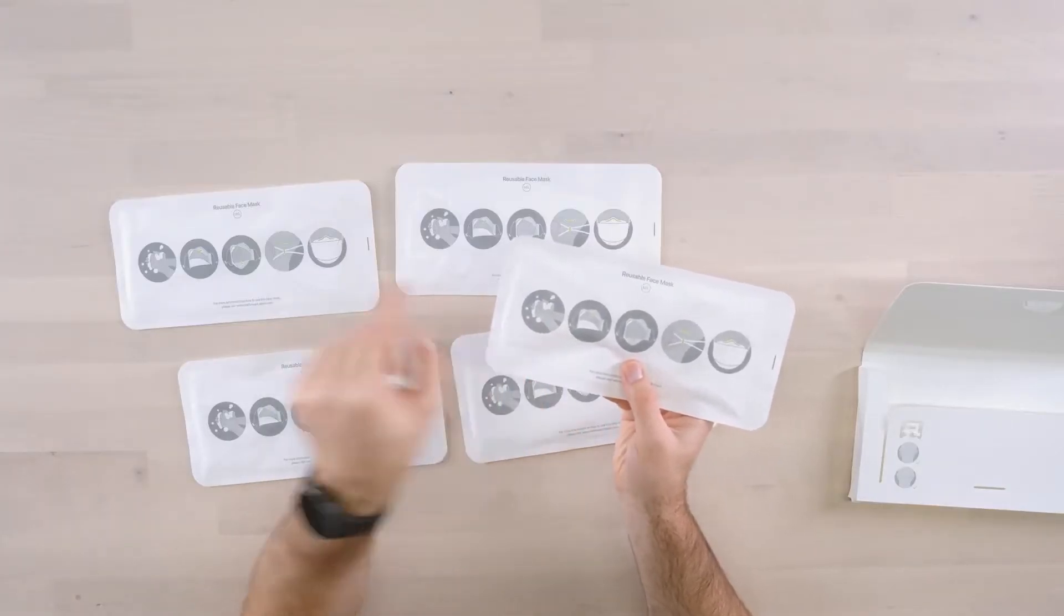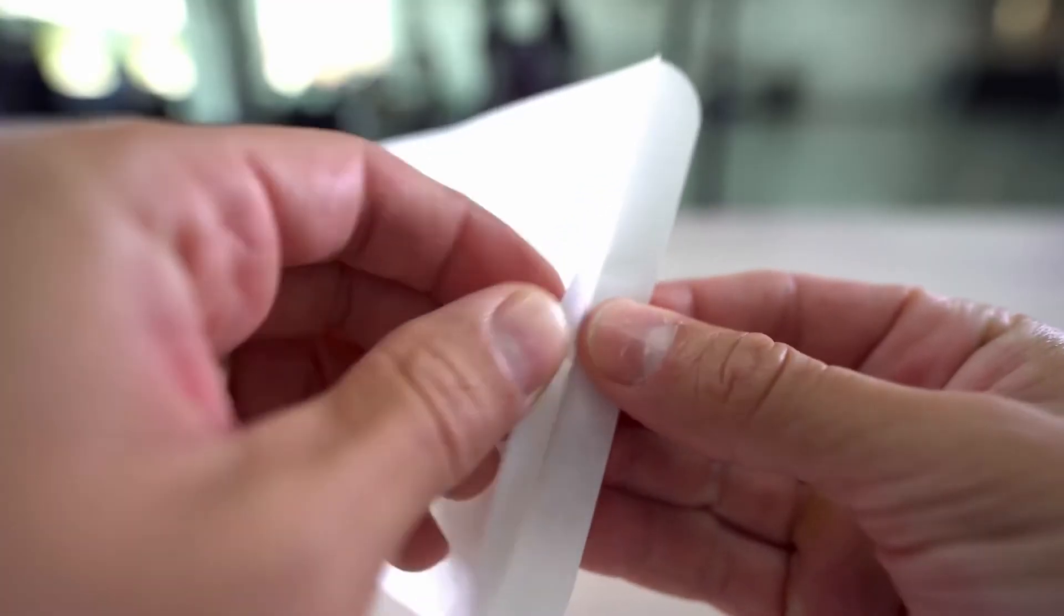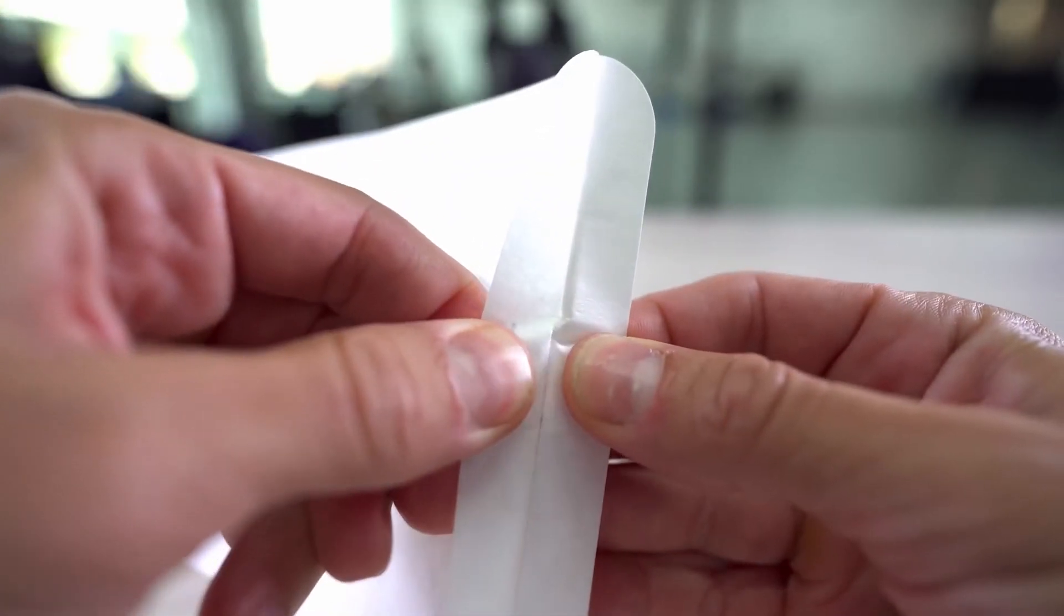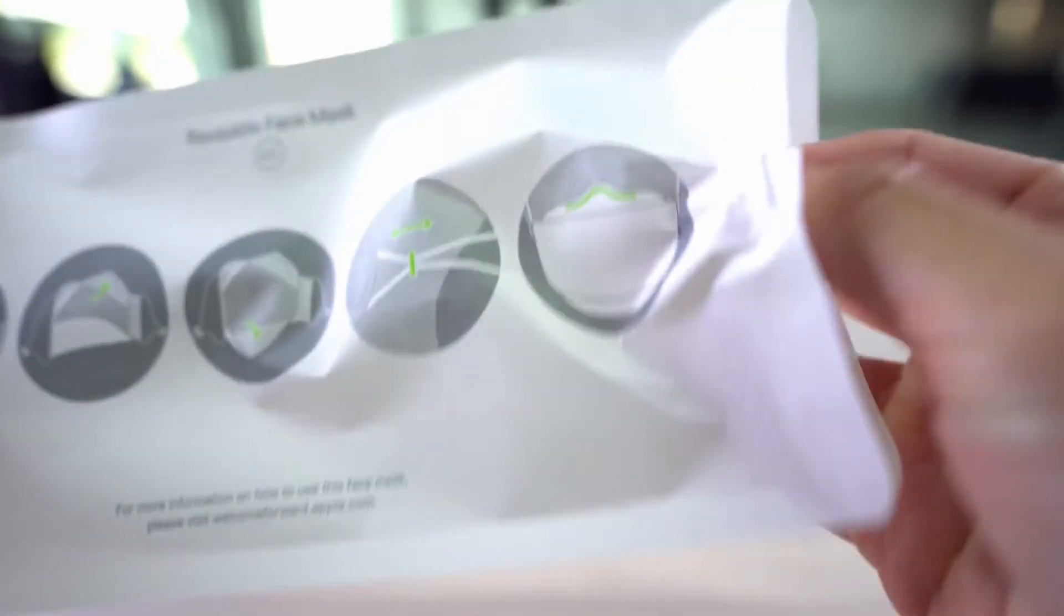For an Apple employee, each mask is capable of being worn five times for up to eight hours each time, so it's supposed to be washed once every eight hours. If you're a part-time Apple employee, you wouldn't have to wash it every single shift. If you were a full-time Apple employee, you would wash it after every single shift. Five times would be the maximum for usage, so it is disposable. It's reusable and disposable.